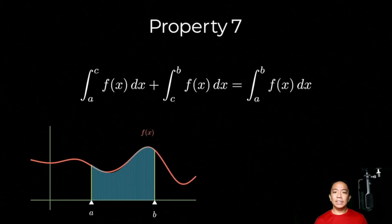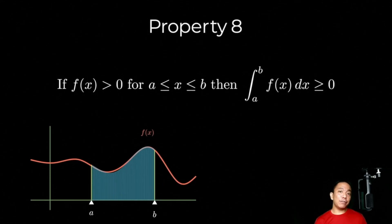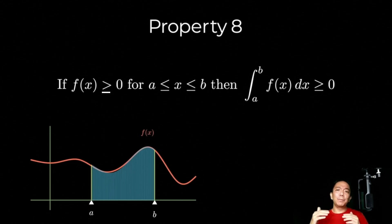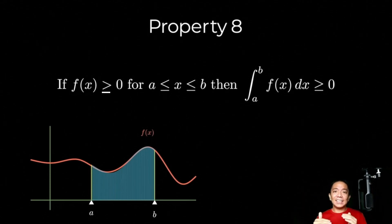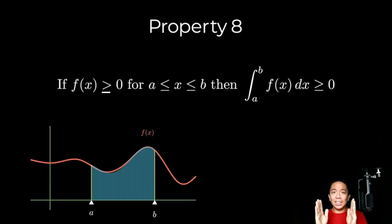Let's move on to the eighth property. The eighth property states that if f of x is greater than or equal to zero for all values of x between a and b, then the definite integral from a to b of f of x will also be greater than or equal to zero. This should be easy to see — kung yung buong function natin yung buong boundary ay nasa taas ng x-axis, e di yung definite integral — the region na form niya with the x-axis for any bounds a and b — will always be positive.